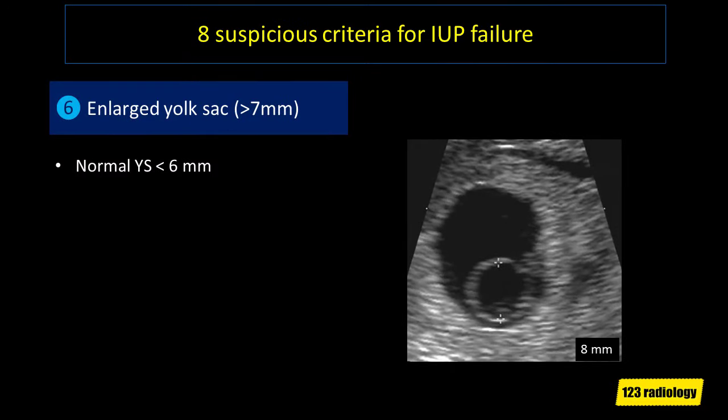The sixth suspicious criterion is an enlarged yolk sac greater than 7 mm. The normal yolk sac is less than 6 mm. If the yolk sac is 7 mm or more, that is suspicious for pregnancy failure. As you can see on this image, the yolk sac measures about 8 mm — this is abnormally enlarged and suspicious for pregnancy failure. Follow-up ultrasound study is recommended.